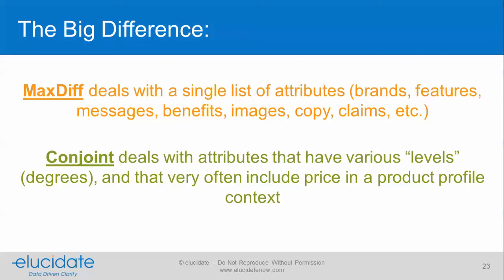When should you consider Conjoint over MaxDiff? MaxDiff deals with a single list of attributes like brands, features, or messages, whereas Conjoint deals with attributes that have various levels or degrees to them, and very often includes price in a full product profile context. Think of MaxDiff as: I've got a list and I need to discriminate those items — versus Conjoint: I've got a full product profile that I'm trying to optimize.